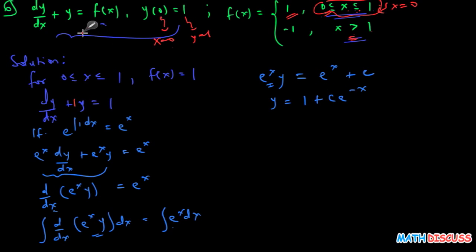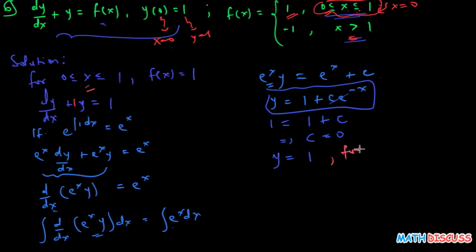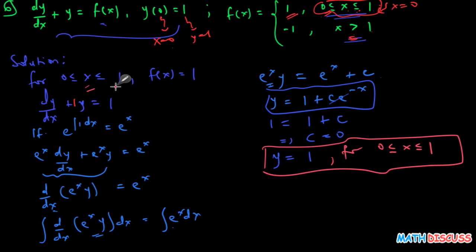Implementing the initial condition in the general solution: when x = 0, y = 1, so 1 = 1 + C·e^0 = 1 + C, which gives C = 0. With C = 0, the particular solution for the first interval is y = 1 for 0 ≤ x ≤ 1.